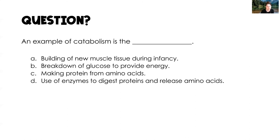Last question: an example of catabolism is — the answer is breakdown of glucose to provide energy. The building of new muscle tissue, making proteins from amino acids, and using enzymes to digest proteins and release amino acids are all anabolism, where we are building up. Catabolism is where we are breaking down.